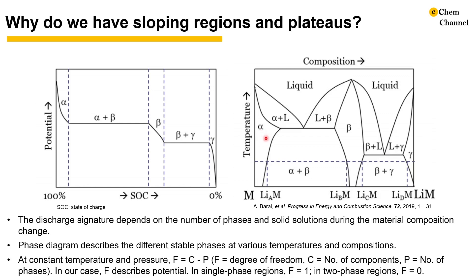Going back to our example, in single phase regions, we have two components and one phase. The subtraction is 1, so we have a degree of freedom of 1, which means potential can vary. In two phase regions, we have two components and two phases. The subtraction is 0, and therefore the potential should be invariant. Now we understand why we have plateaus in some regions and varying potentials in others.